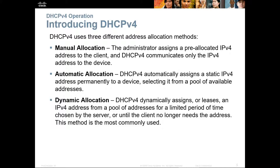With manual allocation, the administrator assigns all pre-allocated IPv4 addresses to clients, and DHCP will communicate only those IPv4 addresses to the devices. You can think of this as more like a reservation — you pre-configure a MAC address so that it receives a specific IP address. That means you have to manually allocate specific MAC addresses so they receive the appropriate IP addresses.